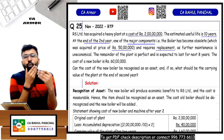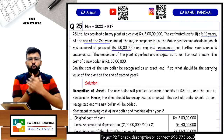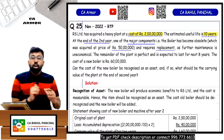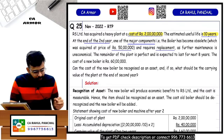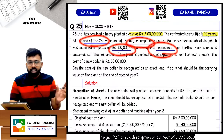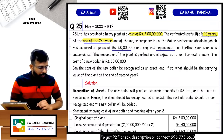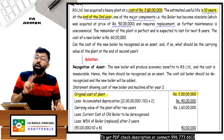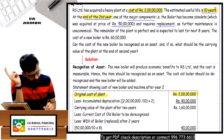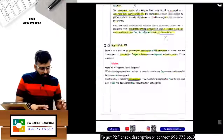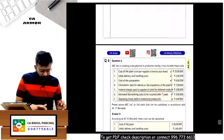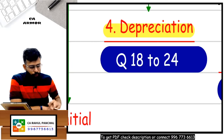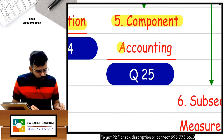Question 25 (RTP 2022): machinery purchased for 200 lakhs with a life of 10 years. Annual depreciation: 200 lakhs divided by 10 = 20 lakhs. After 2 years, depreciation = 40 lakhs. Carrying value (WDV of PPE) = 160 lakhs. Now we move to component accounting. Component means a part of PPE which has a significant cost - for example, an air conditioner has a compressor which may have a different life.